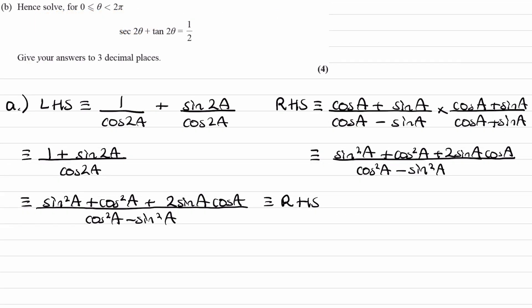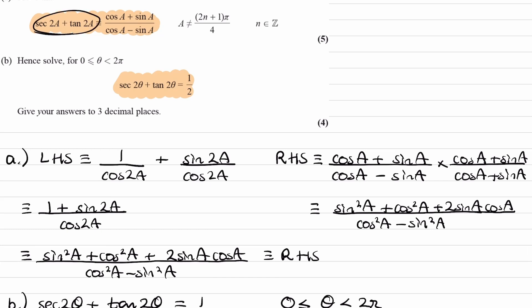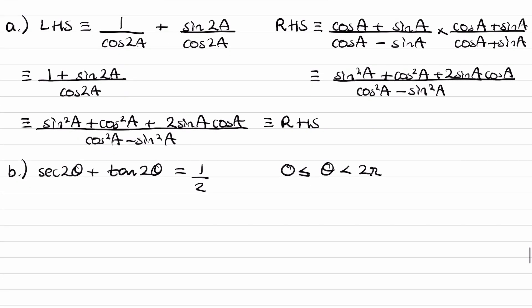For part b, hence solve between 0 and 2 pi, sec 2 theta plus tan 2 theta is equal to a half. So what we see on the left hand side is the same as what we see here. So that means that we can express, it says hence in the question, so we want to use the previous part. We can express the sec 2 theta plus tan 2 theta as this. So let's do that. Cos theta plus sin theta over cos theta minus sin theta is equal to a half.